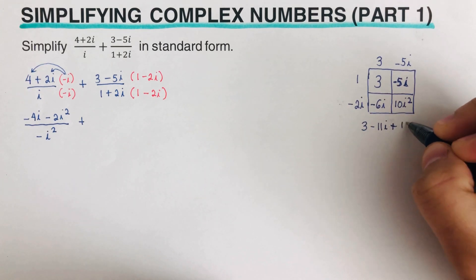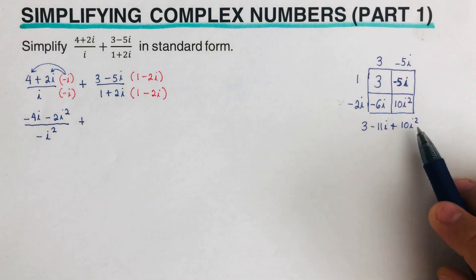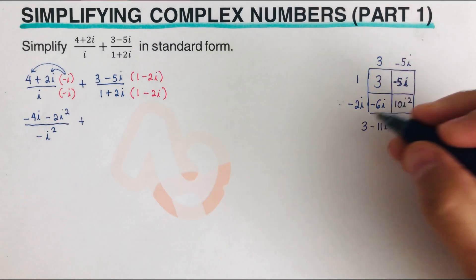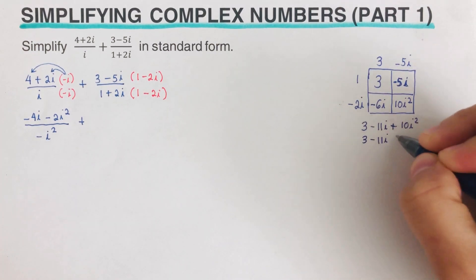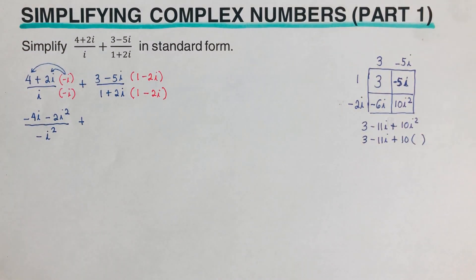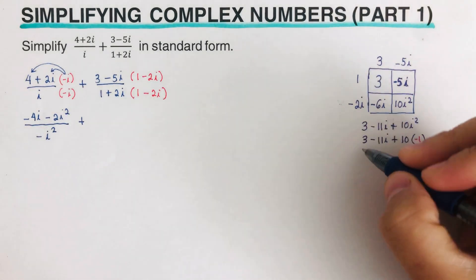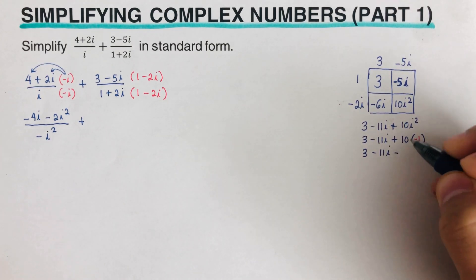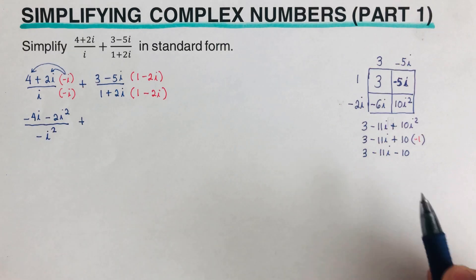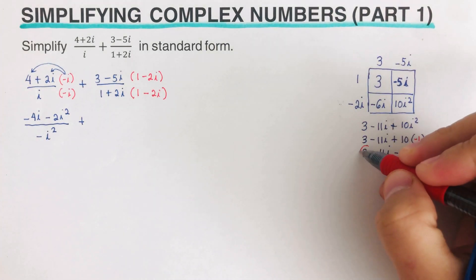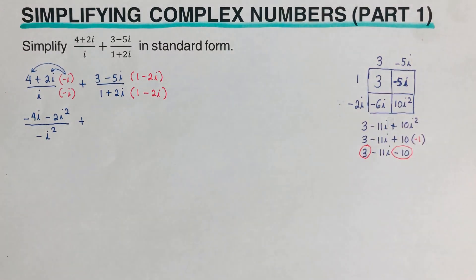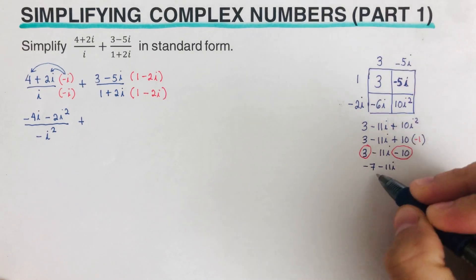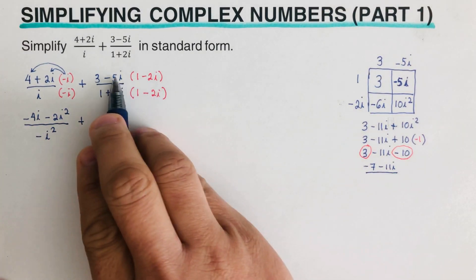We recall that i squared equals negative one, so we substitute that in. This gives 3 minus 11i plus 10 times negative one, which is 3 minus 11i minus 10. Combining like terms: 3 minus 10 is negative 7, so the numerator simplifies to negative 7 minus 11i.